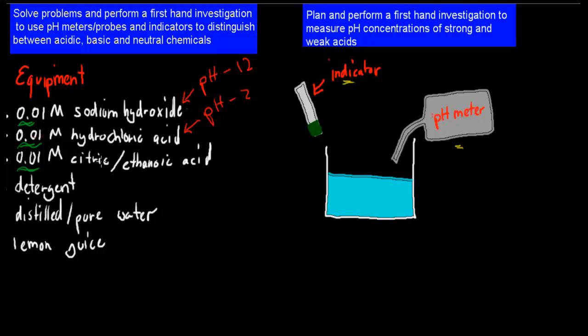Citric acid and ethanoic acid—we would have a pH which would be higher than our hydrochloric acid, because both of these are weak acids. But it would be quite a bit lower than our sodium hydroxide, because it's an acid. So this would have a pH of around about 2.5 to 4, depending on the concentration as well.